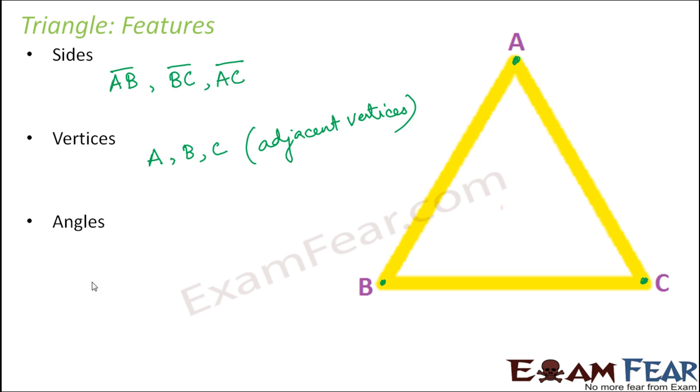Next are the angles. So what are the angles which make this triangle? Let us name these internal angles: angle BAC, angle ABC, and angle ACB. These are the angles which form this triangle.